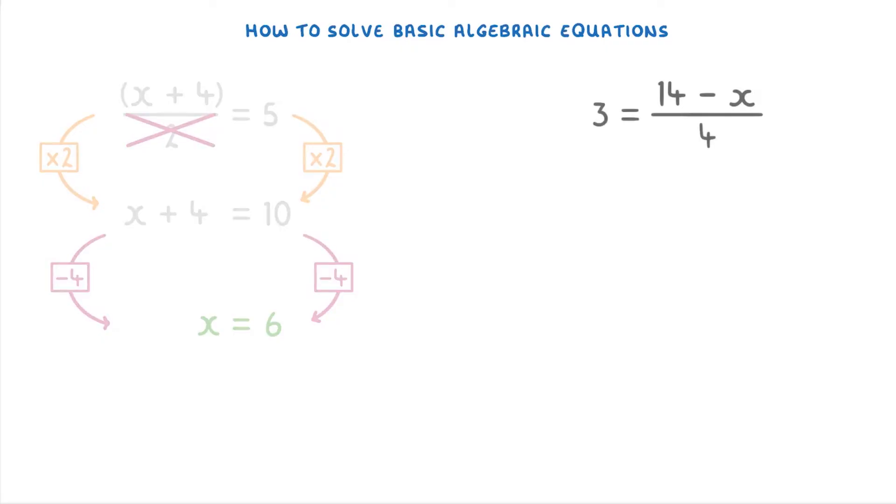For this next one, 3 equals 14 minus x divided by 4. The 14 minus x on the top is effectively in a bracket because the whole thing is being divided by 4. So the first thing that we're going to need to do is get rid of the fraction by multiplying both sides by 4, which will give us 12 on the left and 14 minus x on the right.